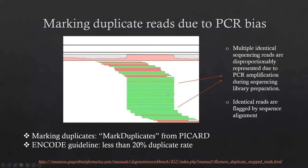Now the question is: how much duplicate rate is acceptable? There is no definitive answer, but the ENCODE guideline states that if a sample has less than 20% duplicates, the sample has good quality in terms of duplicate reads.